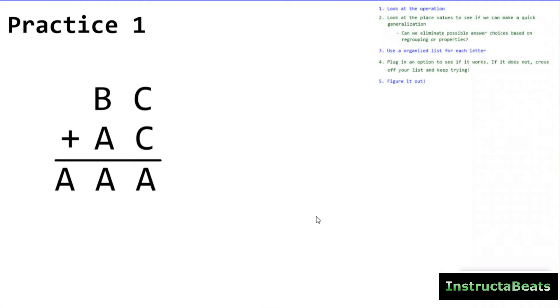Okay, here is practice number 1. Now, I actually think, although it is kind of difficult for our brains to wrap around it, doing a base 5 cryptorhythm is a little bit easier than base 10. Why might you ask? Because there are only 5 digits that each of these letters can be instead of 10. So when we make an organized list, we have a lot less numbers to try. All right, so step number 1, let's look at the operation. I see I'm adding.